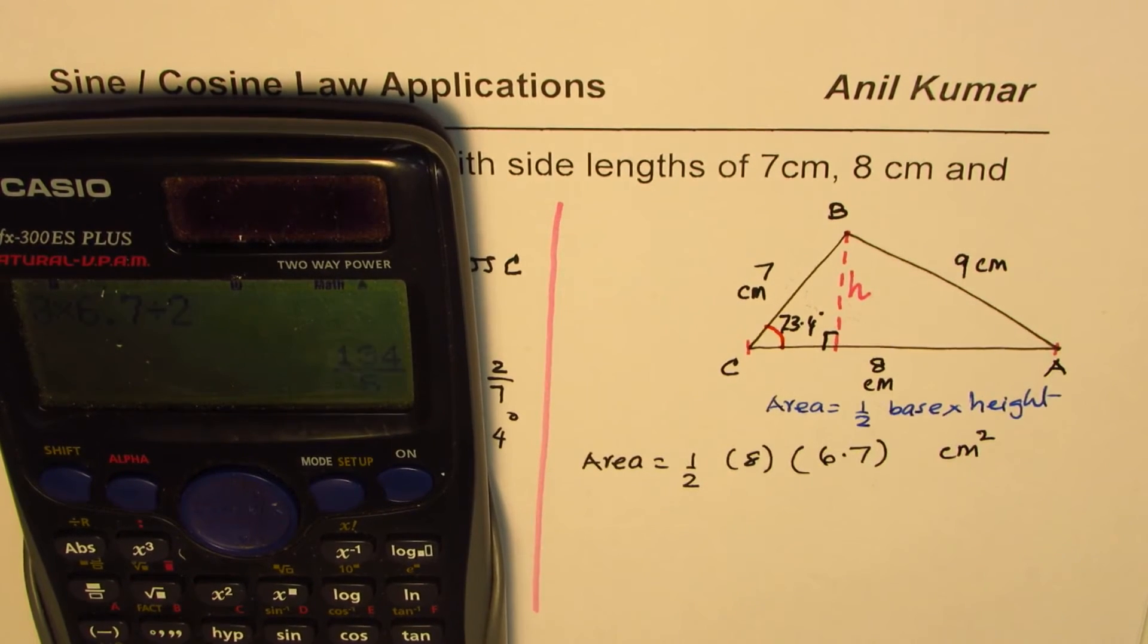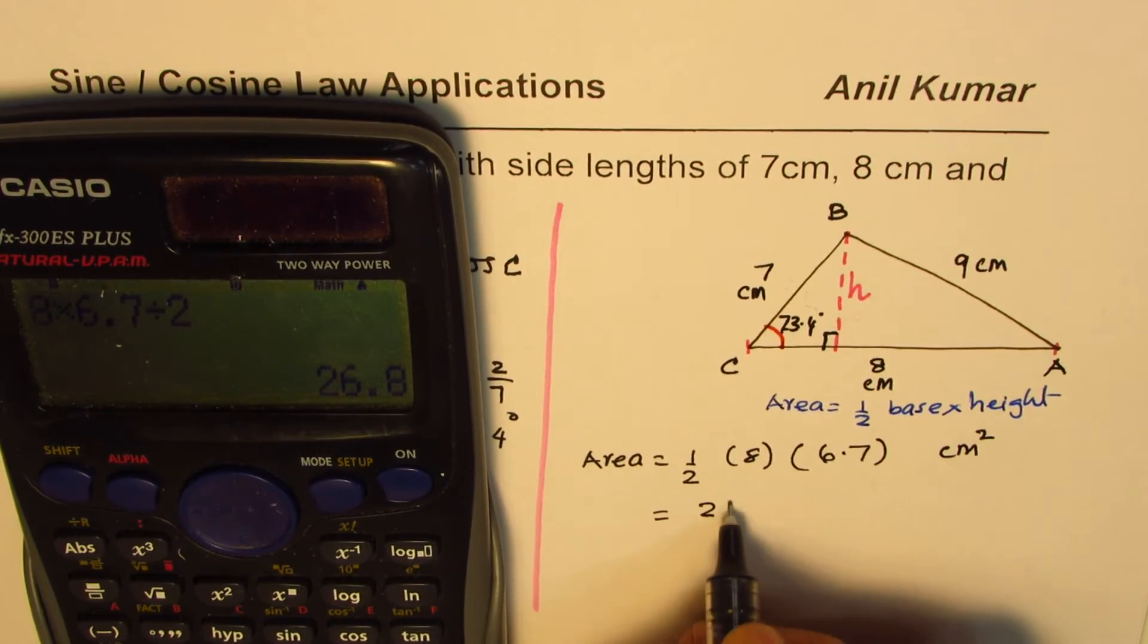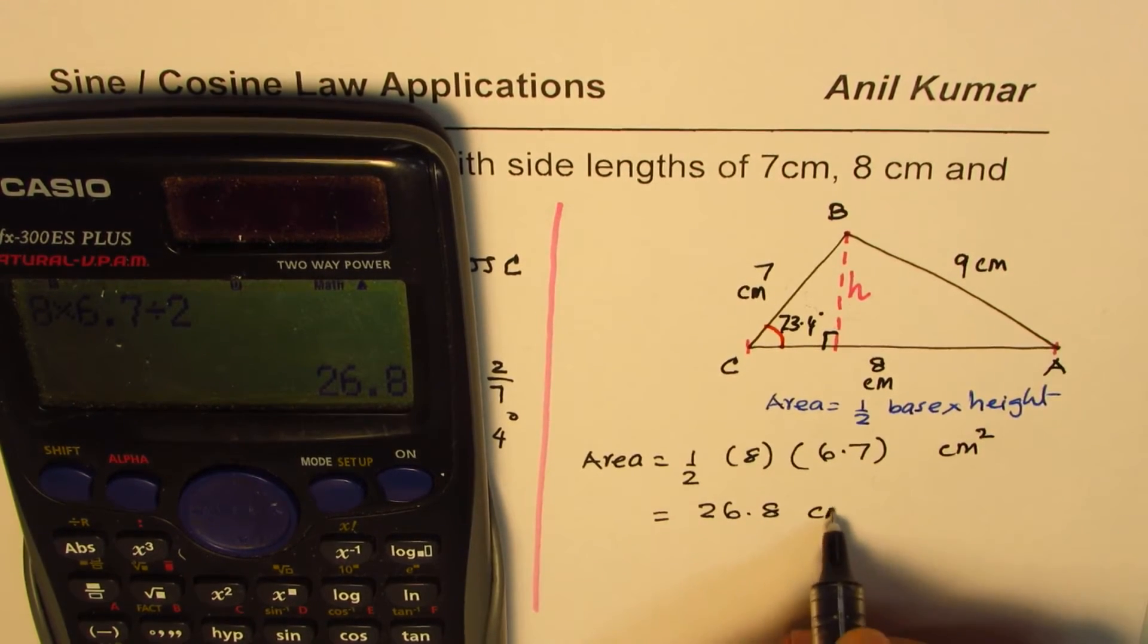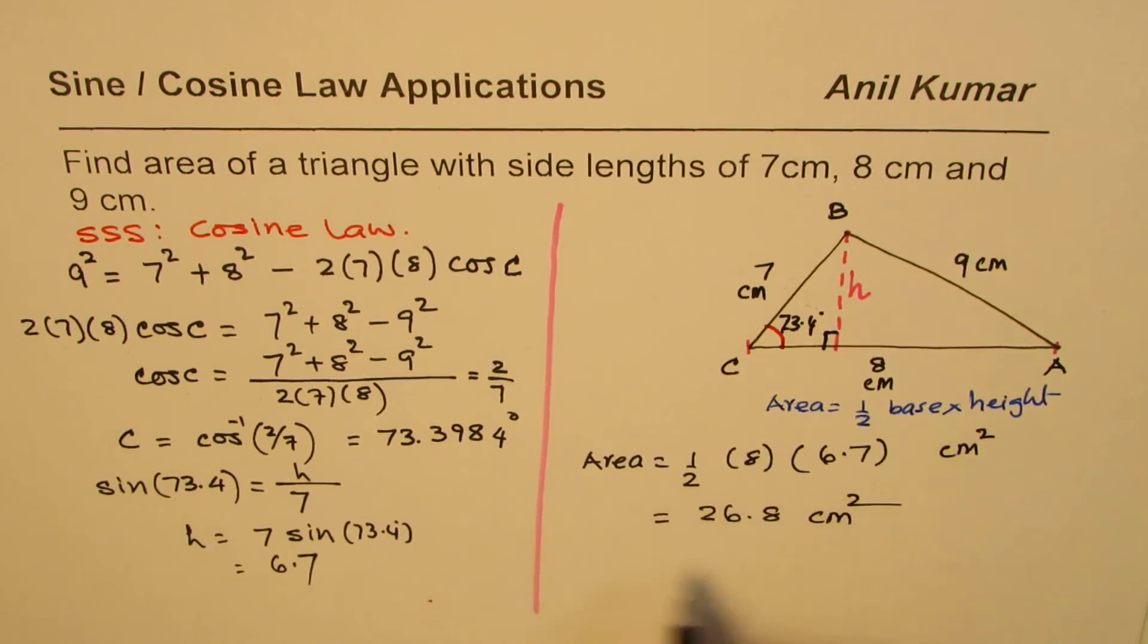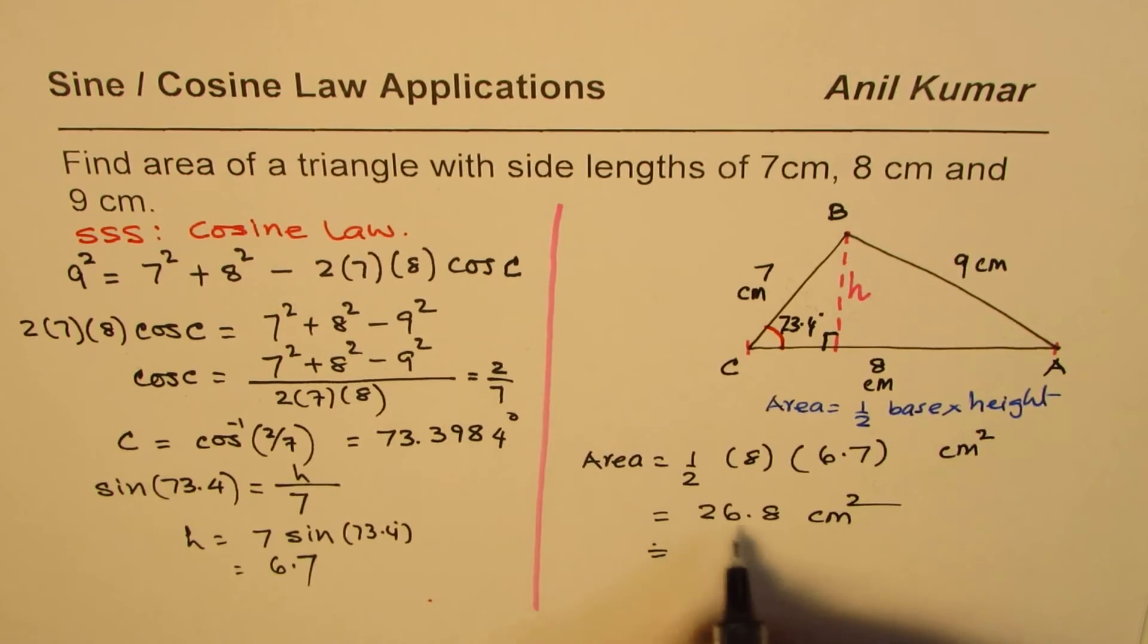So let's use the values: 8 times 6.7 divided by 2 equals, in decimals, 26.8 centimeters square. So that is how you can get area of the triangle. If you want, you can round it to whole numbers: 27 centimeters square.